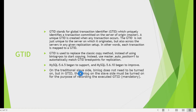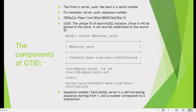GTID replication started in MySQL 5.6.5 and has continued improving through MySQL 8.24 and beyond. On the traditional slave side, the binary log does not need to be turned on for GTID, but if you want slave updates or are using chained replication, you need to enable binary logs and log_slave_updates on the intermediate master.